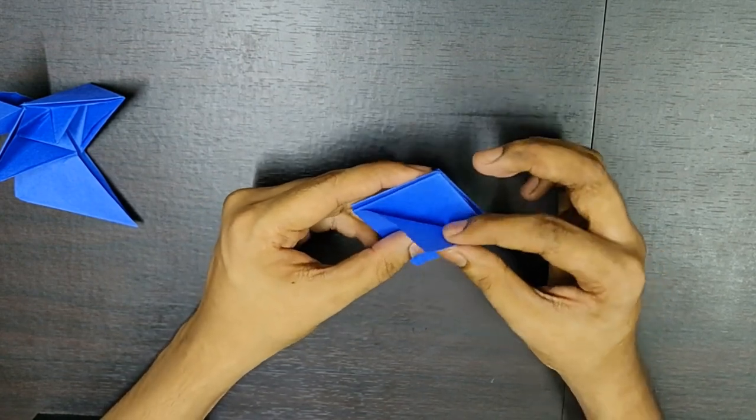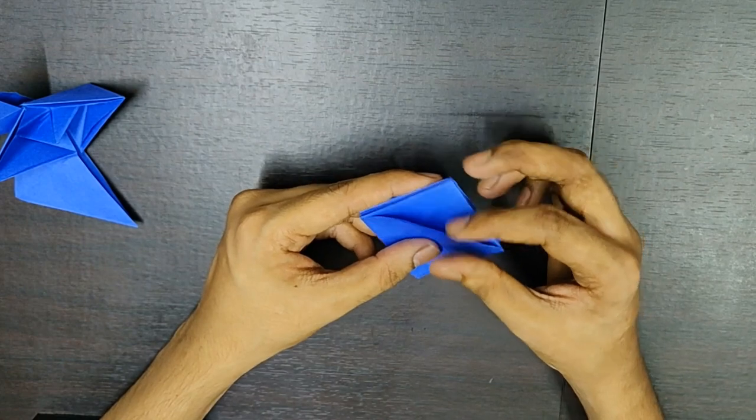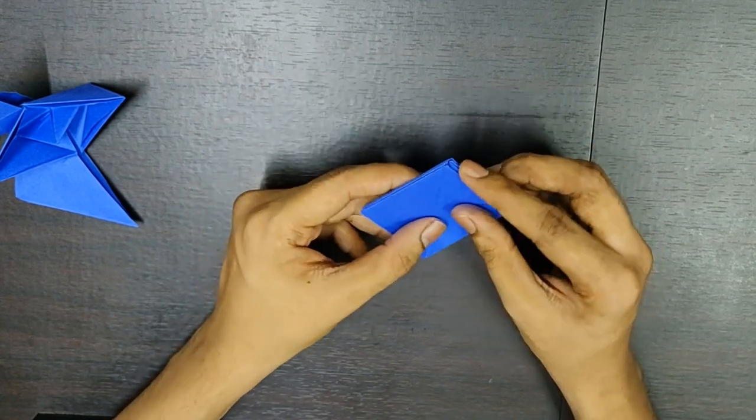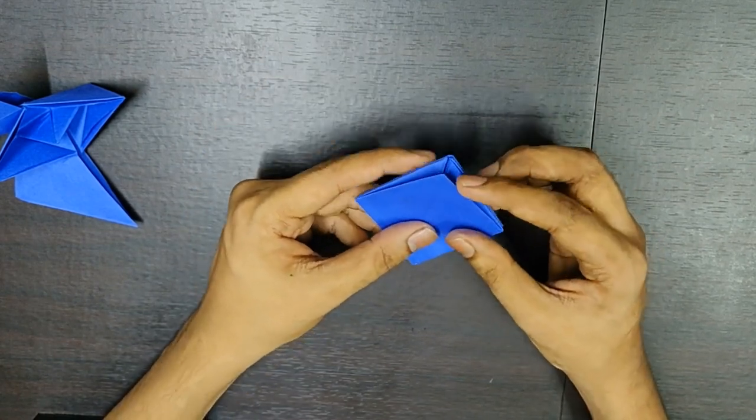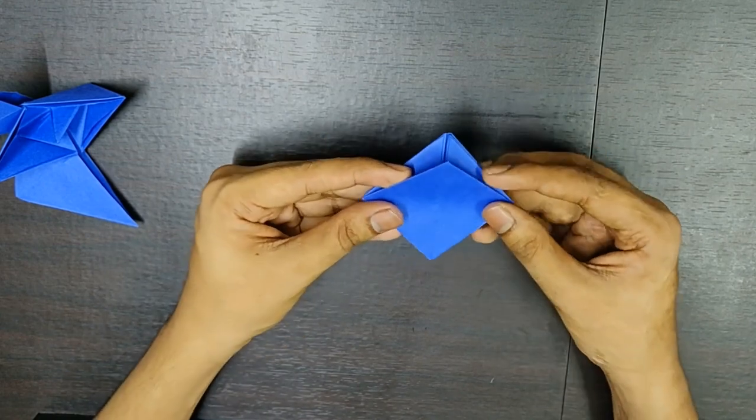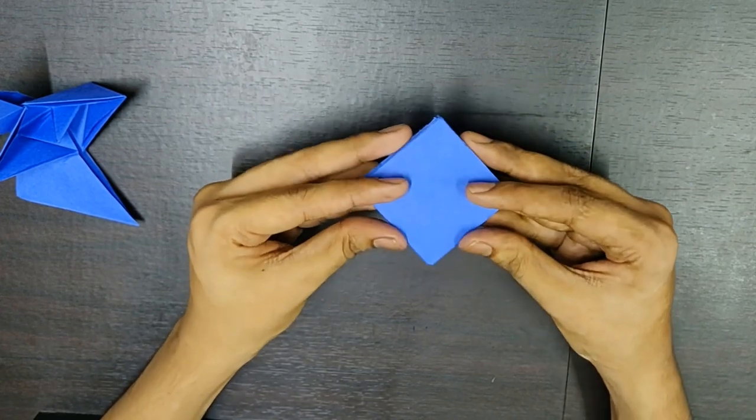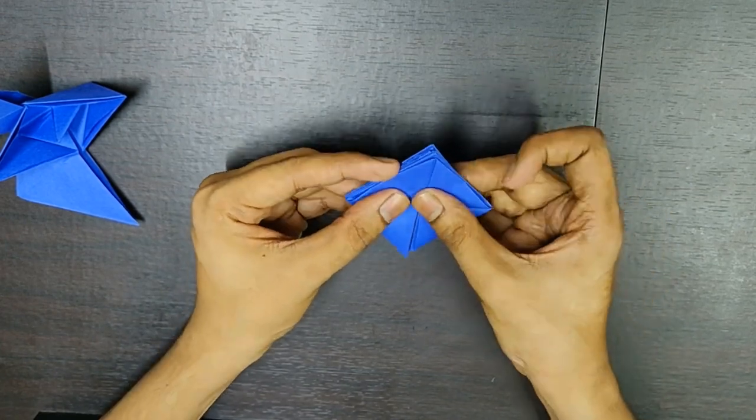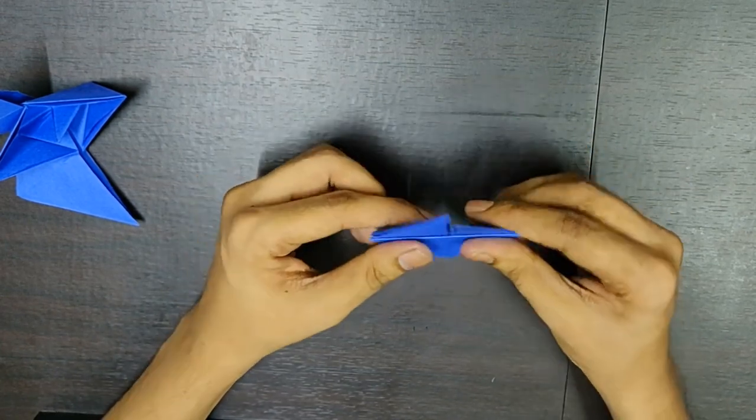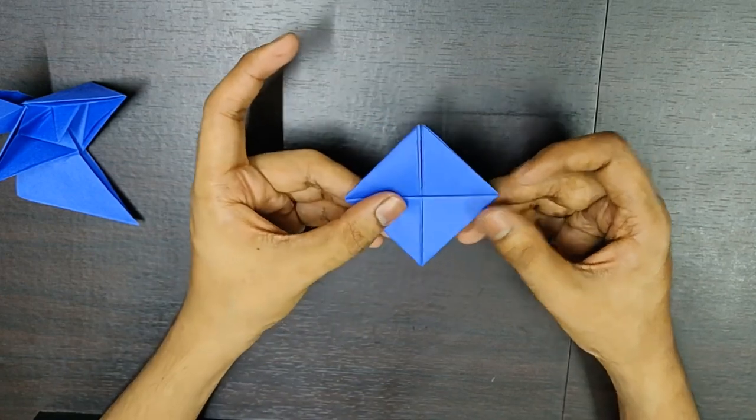Now, if you see, this is a thinner flap. And similarly, on the opposite side, you'll have a thicker flap. So, hold this thicker flap and fold it downwards. Like this. Similarly, on the opposite side, you'll see something like this.